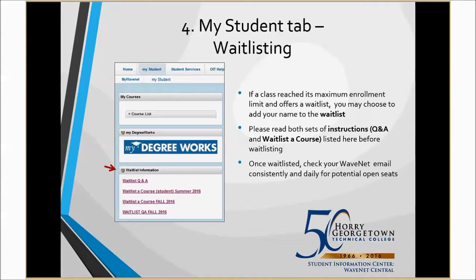The fourth top tool in your WaveNet account is the waitlisting information, located under your My Student tab. If a class has reached its maximum enrollment limit and offers a waitlist, you may choose to add your name to the waitlist. Before you do this, please read both sets of instructions provided here on your My Student tab. There are limited times where waitlisting is available and there is a proper process to adhere to. Once waitlisted, you must check your WaveNet email consistently for notification of a potential opening in the class. You still have to log back into WaveNet to officially register using your registration tools for any waitlisted course.